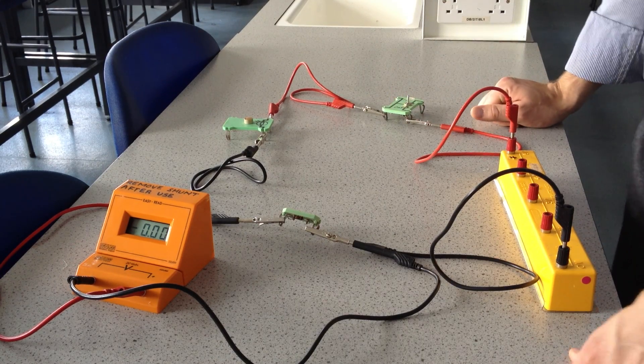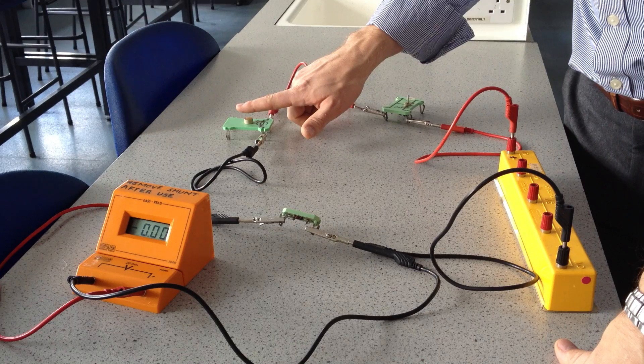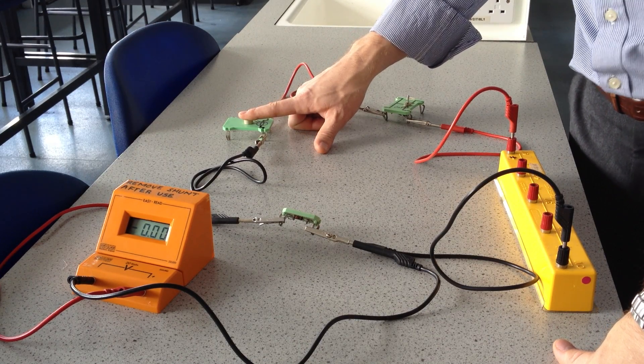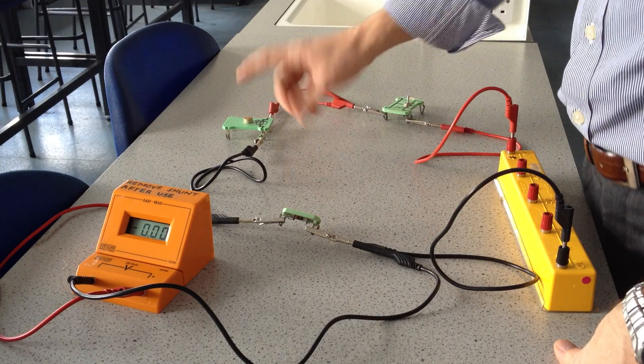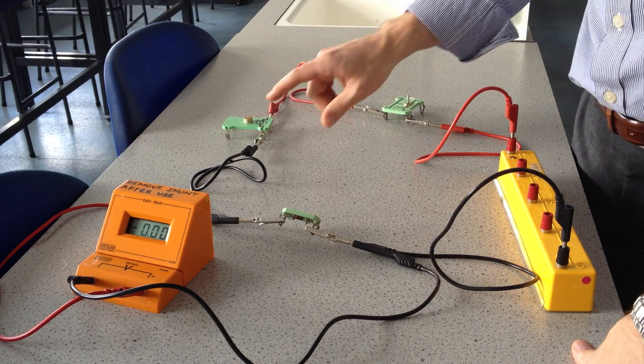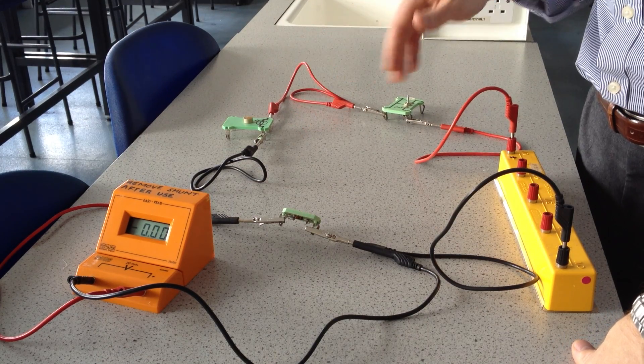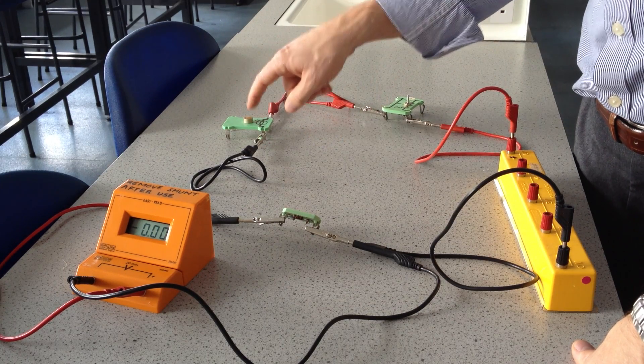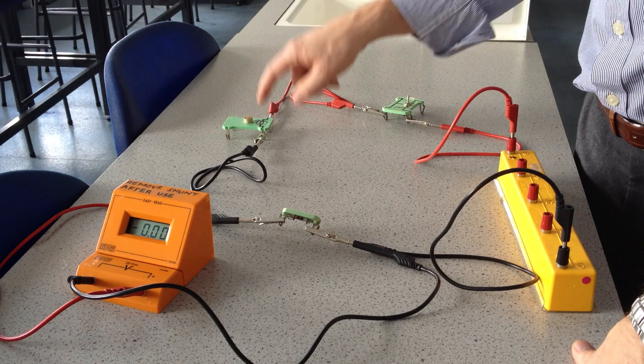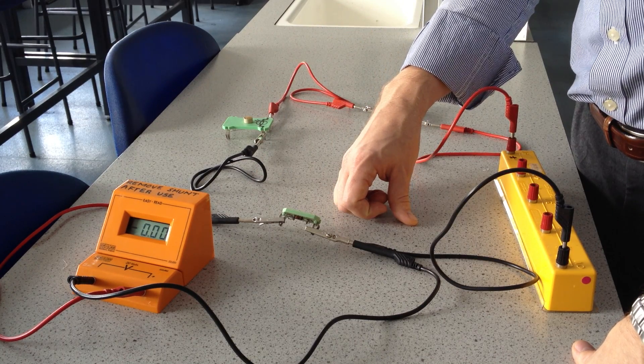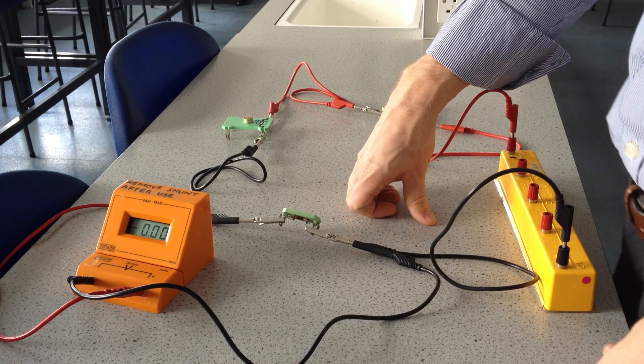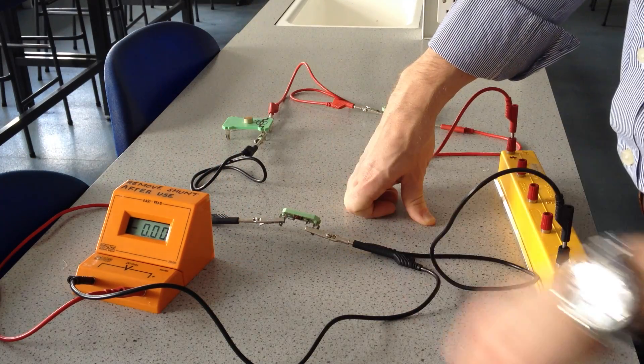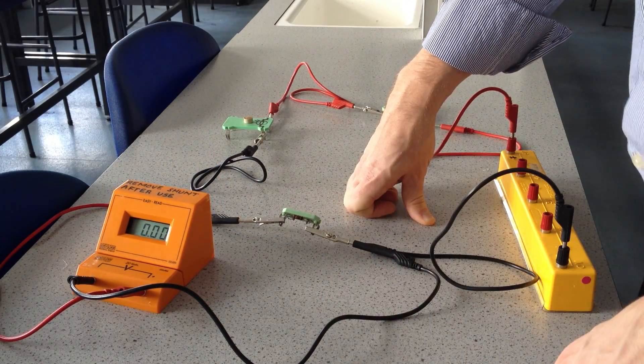So what's going on? When we decrease the light intensity across the LDR, its resistance increased. And that meant its voltage share from the supply increased also. For the voltage share here to increase, the voltage share of the fixed resistor had to decrease. And that's what we saw here. It went down, the voltage did, to about 1.3 volts.